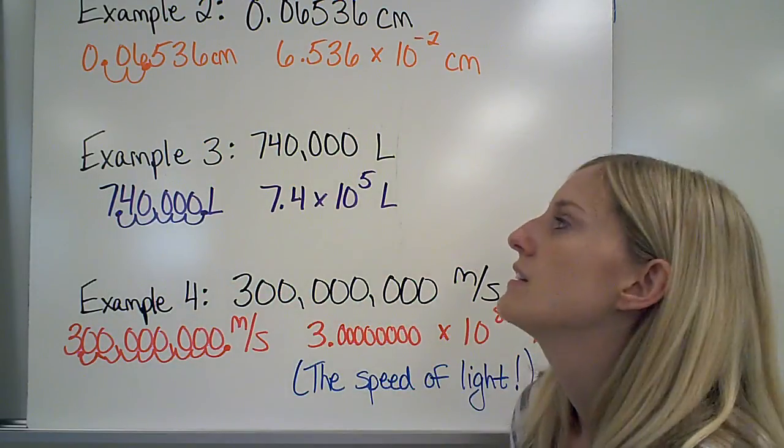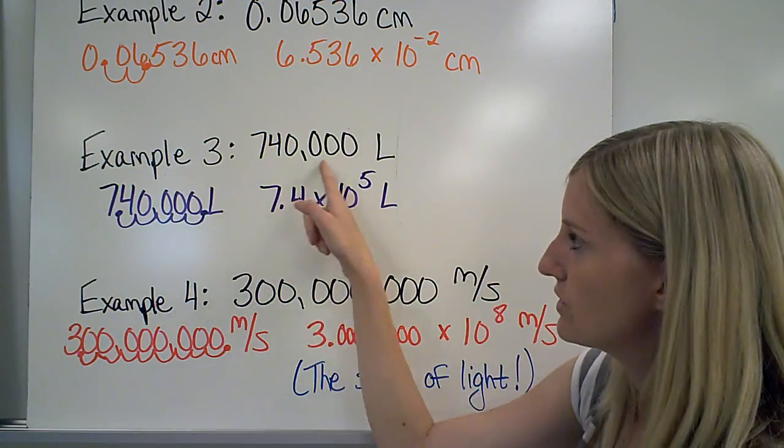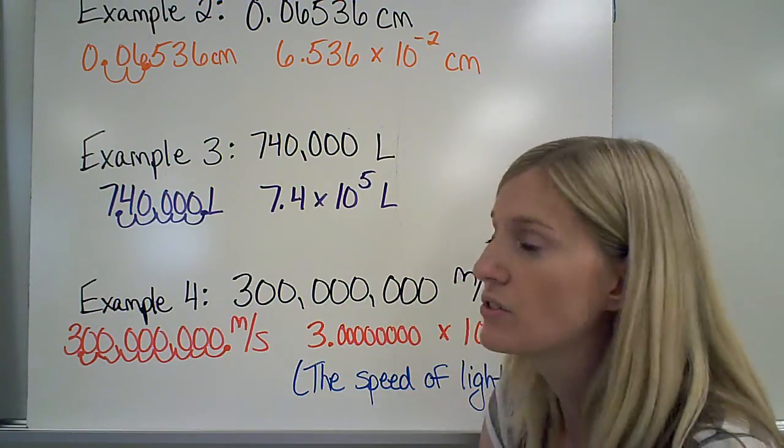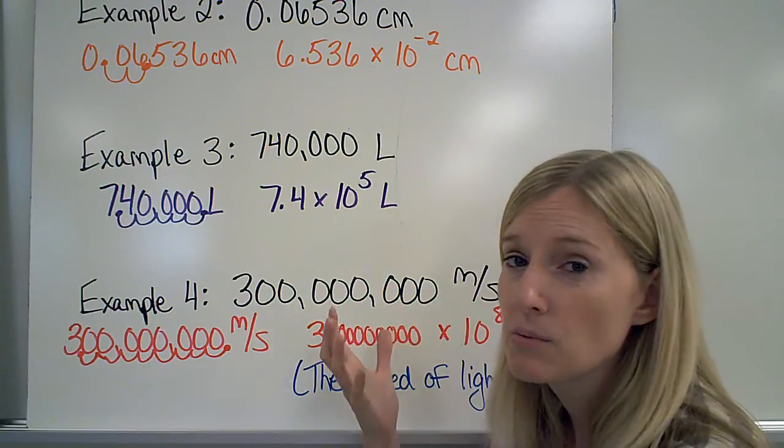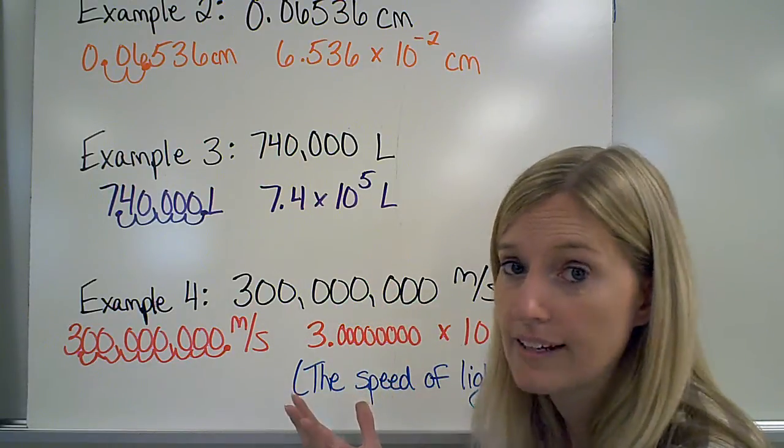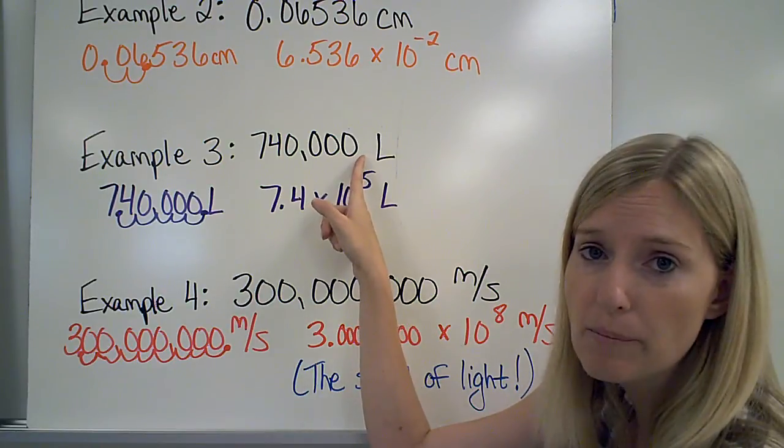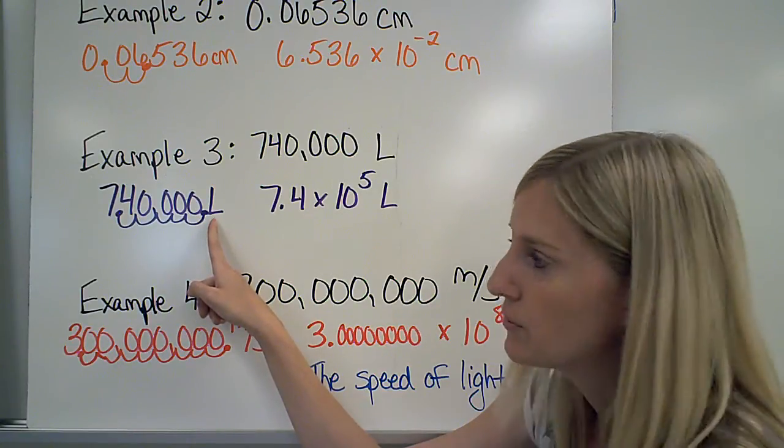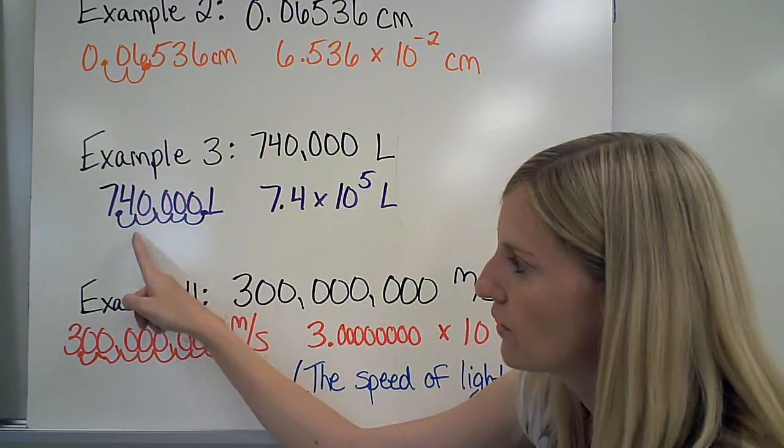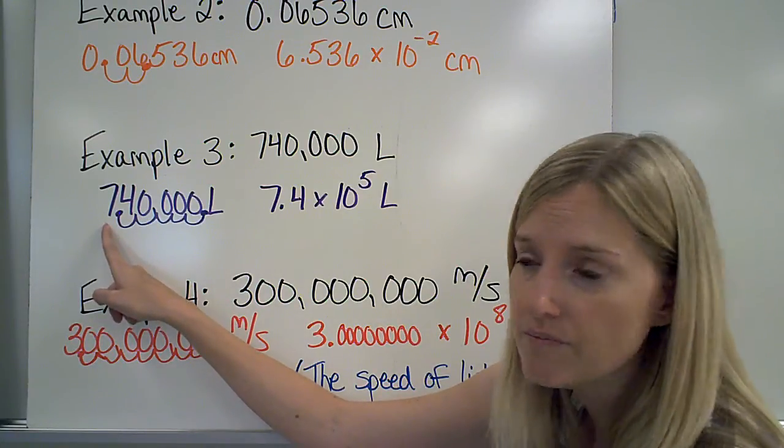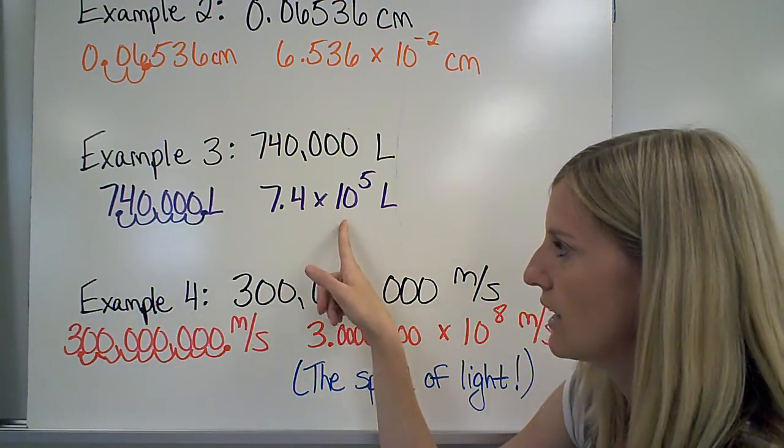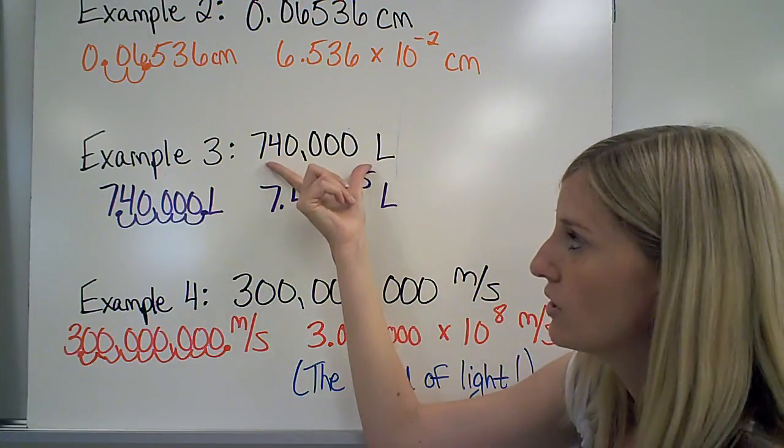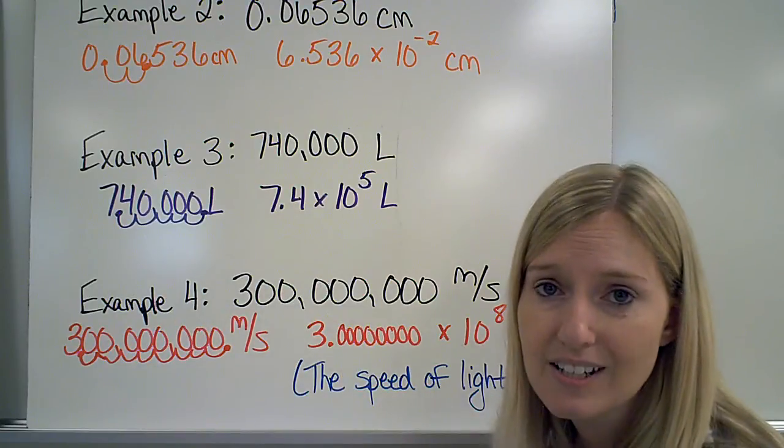Example 3. 740,000 liters. Notice that in this first number, there is no decimal point. The reason what we have to do with that then is we know where the decimal point is supposed to be. It's just not drawn in there. So it should be at the very end of the number. So I draw it in myself right here, and then I move that decimal point until I get a number 1 through 10. So I move it 1, 2, 3, 4, 5 places to the left. So my 1 through 10 number is 7.4 times 10. I moved it 5 places, so that's my exponent. And my original number is much larger than my 1 through 10 number. So that's why the decimal point stays positive.